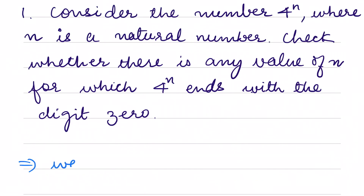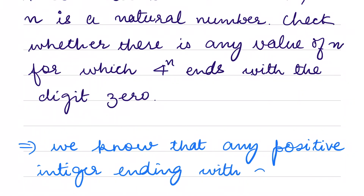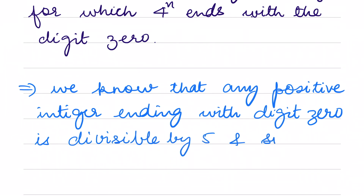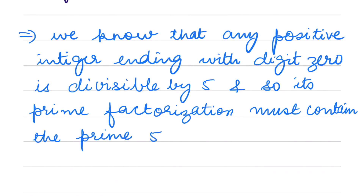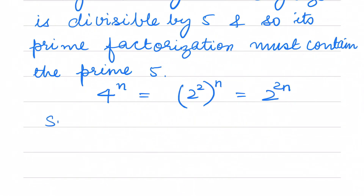We know that any positive integer ending with the digit 0 is divisible by 5, and so its prime factorization must contain the prime 5. Now for 4 raised to the power n, we have the prime factorization as 2 squared raised to the power n, which I can write as 2 raised to the power 2n.